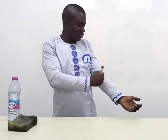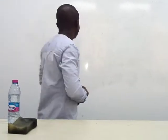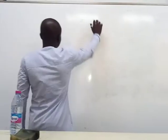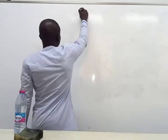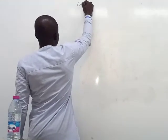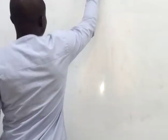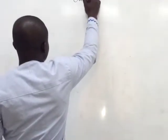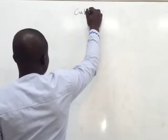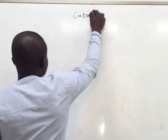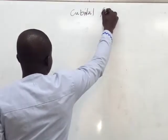It is this triangular depression that we see in front of the elbow. Now we are going to look at the cubital fossa — the anatomy of the cubital fossa.